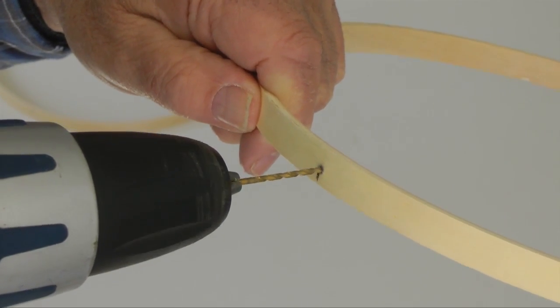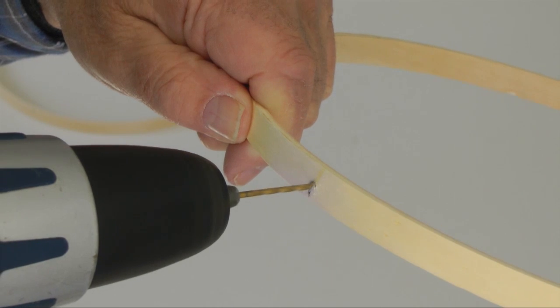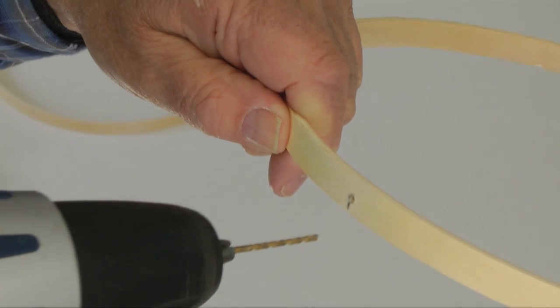Next, drill three small holes at the marks on the larger hoop, and four small holes at the marks on the smaller hoop.